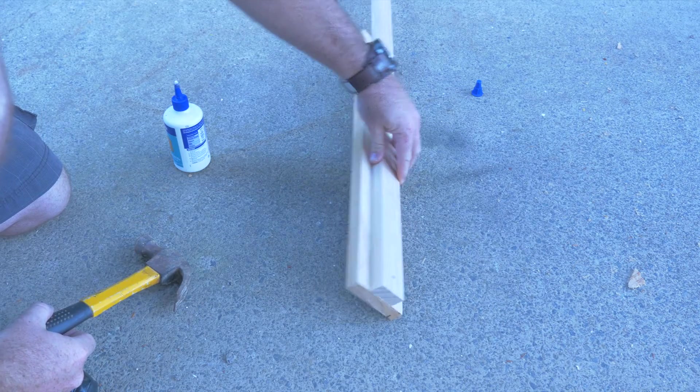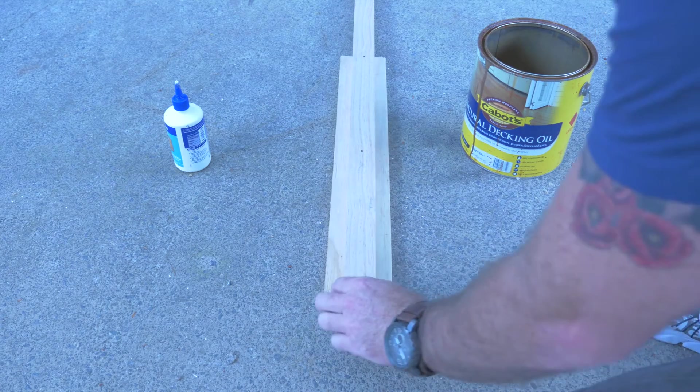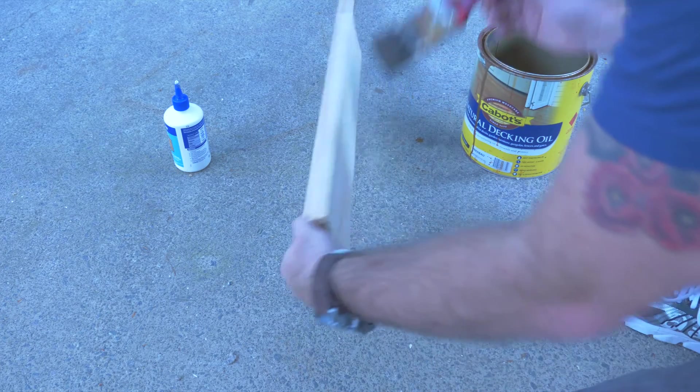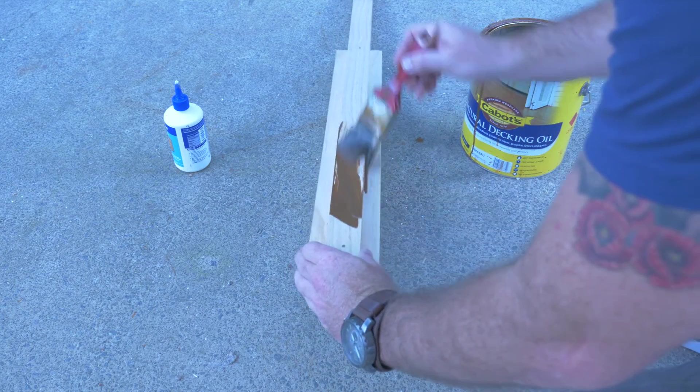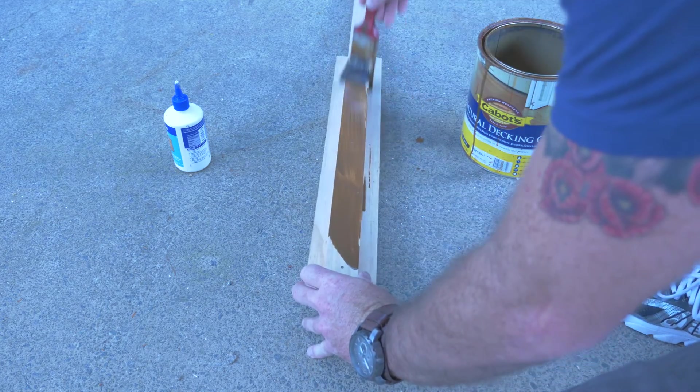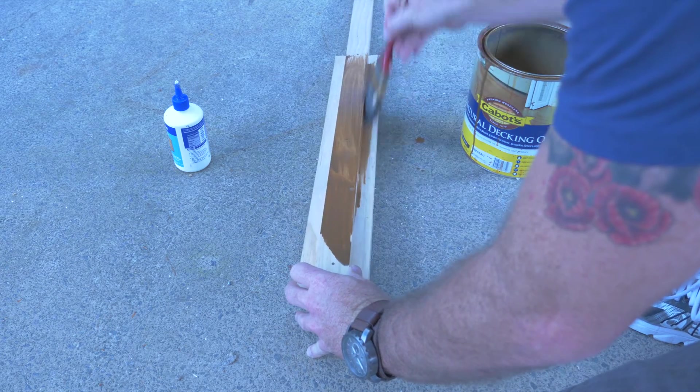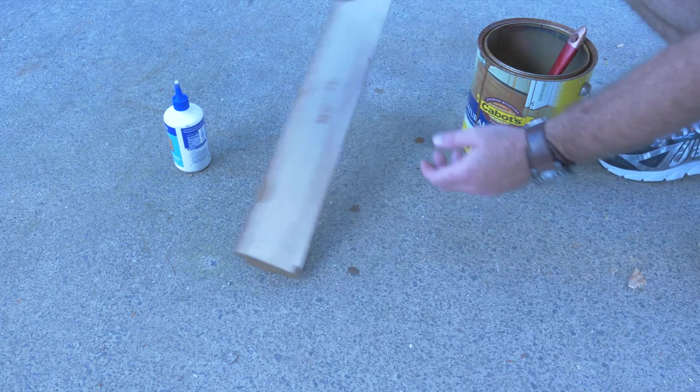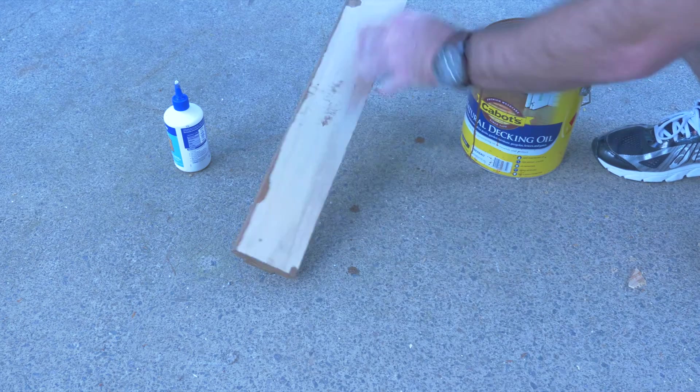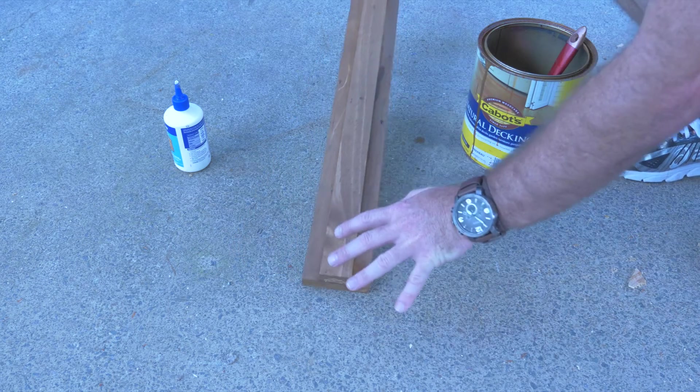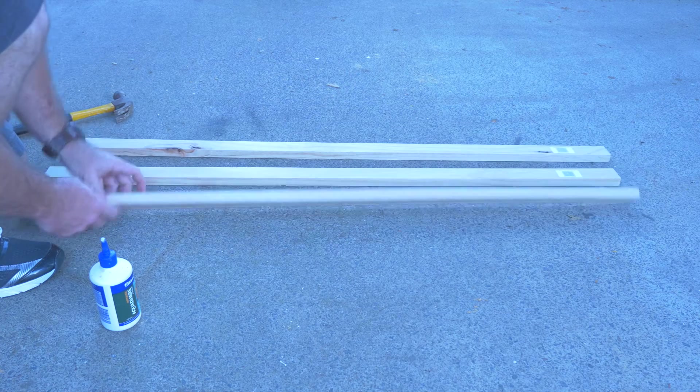The next thing we're going to do is paint this part now. You can choose whatever color. You may want to paint it black or have a different color in mind. I'm just going to stain it. One thing you need to remember when painting this item is to make sure that the front part is not painted, because we'll be gluing some of that reflective cardboard on it later on.